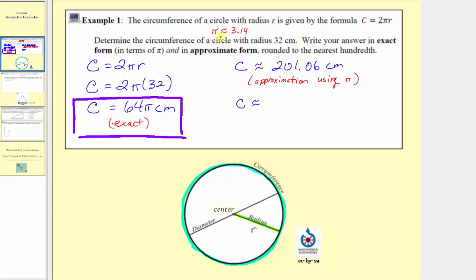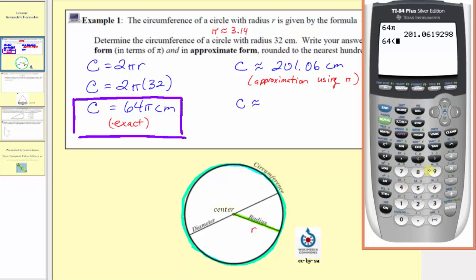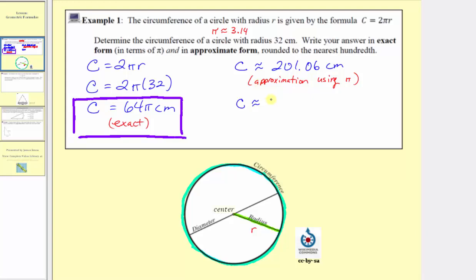Now let's make another approximation using pi as approximately 3.14. So we'll enter 64 times 3.14. Notice how it does give us a different value — this approximation is not as accurate as the previous one. So our second approximation is 200.96, or two hundred and ninety-six hundredths centimeters. This is the approximation using pi as approximately 3.14. It is important when doing the homework to read the directions carefully. My suggestion would be to use the pi key on the calculator, unless it indicates to use a different approximation for pi.